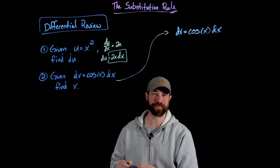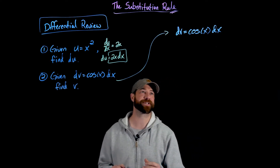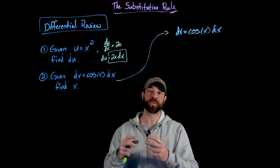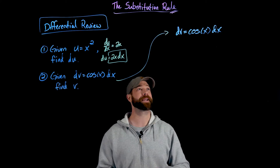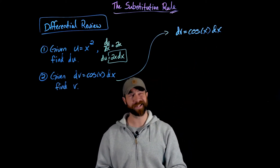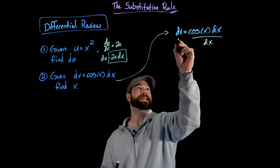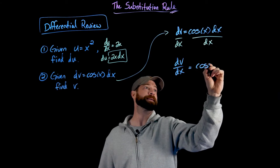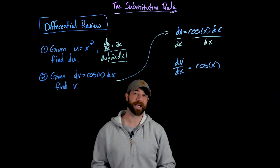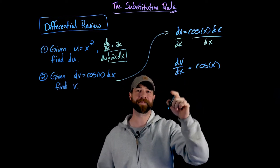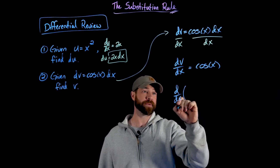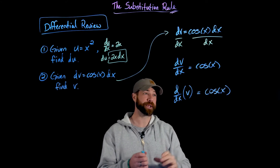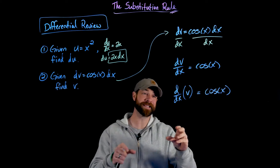This second example is actually not super important for substitution, but it will be for integration by parts, which we'll cover very soon. It also ties in the idea of differentials and plays with the concept that differentiation and integration are opposites of each other. Given the differential dv, what I'm going to do is divide both sides of this expression by dx to get dv/dx equals cosine of x, and then apply the indefinite integral to both sides.